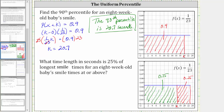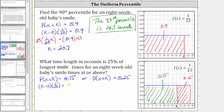Using the green rectangle: the probability that X is less than k equals 0.75. Using the red rectangle: the probability that X is greater than k equals 0.25. For one more step on both — the area of the green rectangle equals (k minus 0) times 1/23, which equals 0.75. Or, using the red rectangle, the base is 23 minus k and the height is 1/23, and this equals 0.25. Both equations yield the same solution for k.